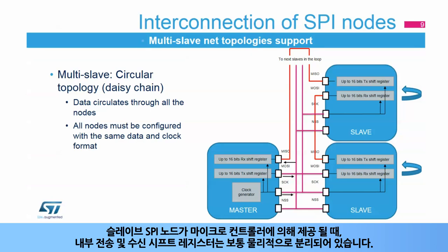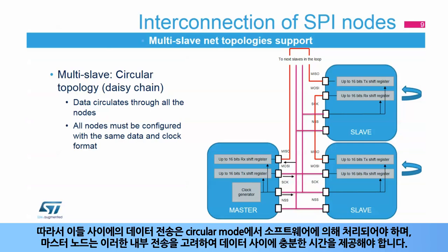When the slave SPI nodes are provided by a microcontroller, the internal transmit and receive shift registers are usually physically separated. So the data transferred between them has to be handled by software in this circular mode, while the master node has to provide sufficient time between data to provide these internal transfers.